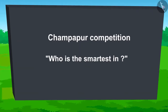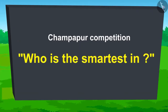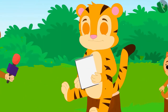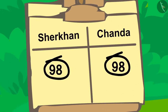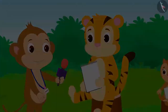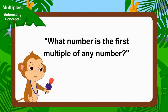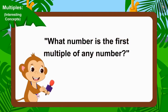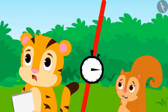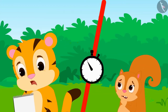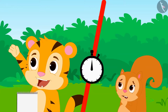The competition 'Who is the smartest in Champapur' is going on. Sheer Khan and Chanda have reached the last round. Both their scores are equal at the moment. The organizer of the competition, Babban, now posed this question in front of them: What number is the first multiple of any number? Time has started ticking and Chanda and Sheer Khan started thinking.